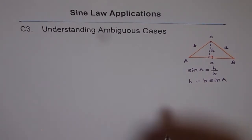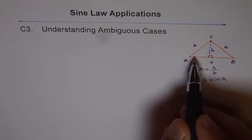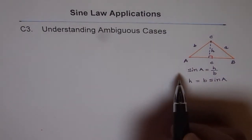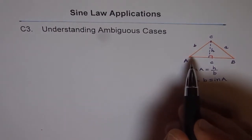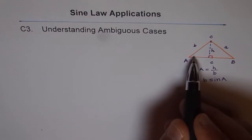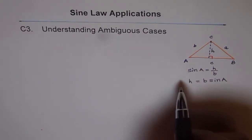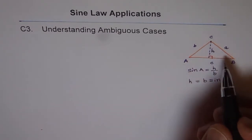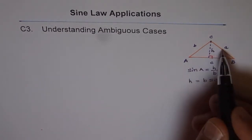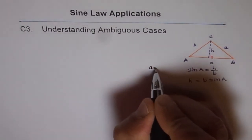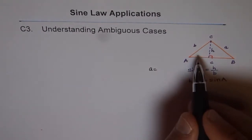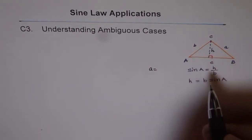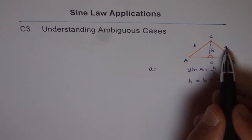We will consider two scenarios: one where angle A is acute (less than 90 degrees), and one where angle A is obtuse (more than 90 degrees). Let's first suppose the case where A is an acute angle, meaning less than 90 degrees. Consider a triangle with angle A equal to, say, 30 degrees, and we look at side a opposite to A.